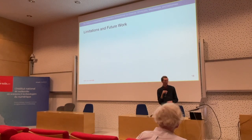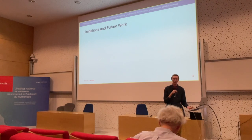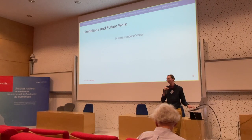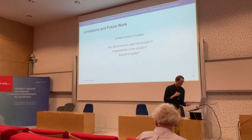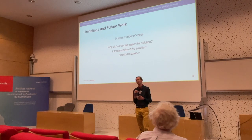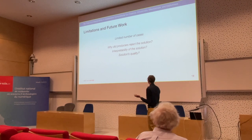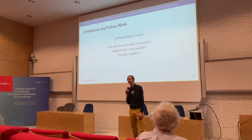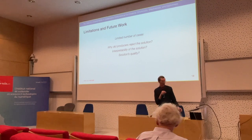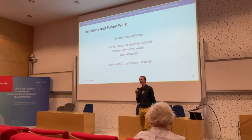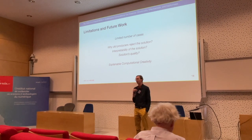A potential limitation of this work was the number of cases — we only had three that we were building from and then recommending another two, so few-shot learning might have been totally off base and the research could have been severely affected by that. Additionally, we don't really understand why producers rejected a solution: was it the interpretability, or did they just not like the quality of the interpolated values? We posit that explainable computational creativity — a subfield of XAI within the computational creativity community — might be able to help address this.